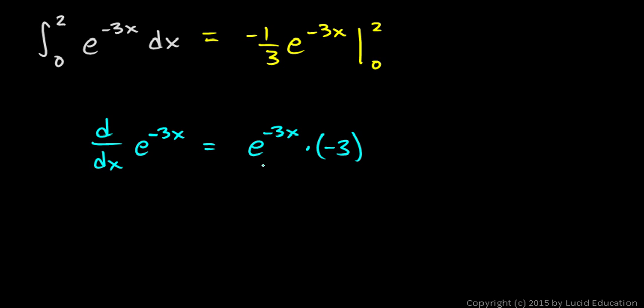Now that's not quite the same as what we have here. Here, we have this extra factor of negative 3, which we need to get rid of, and we can get rid of that by introducing a factor of negative 1 third.